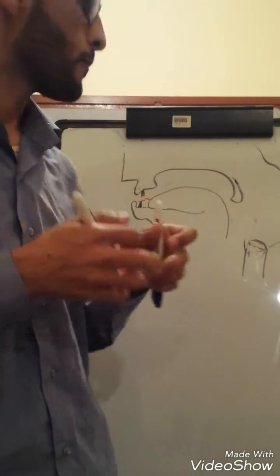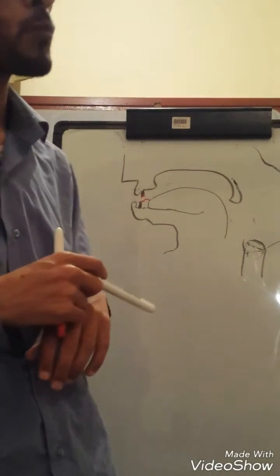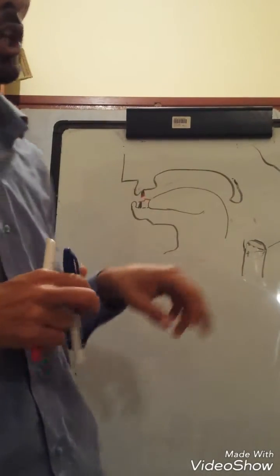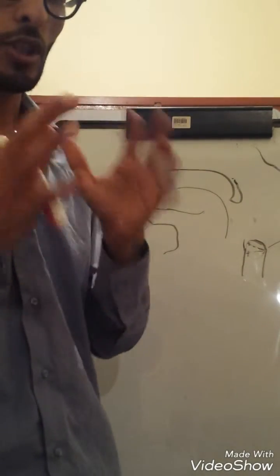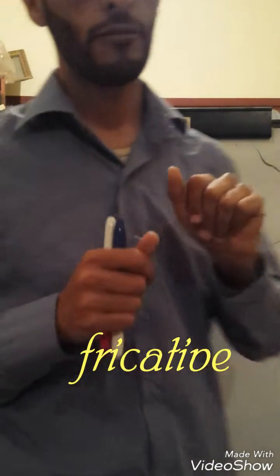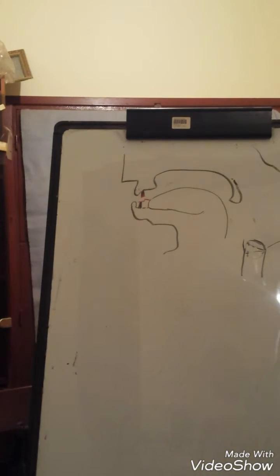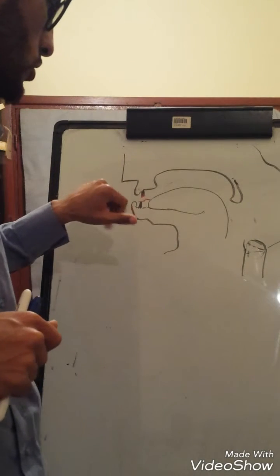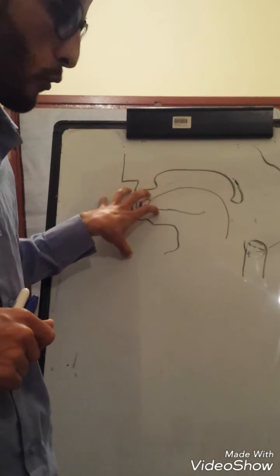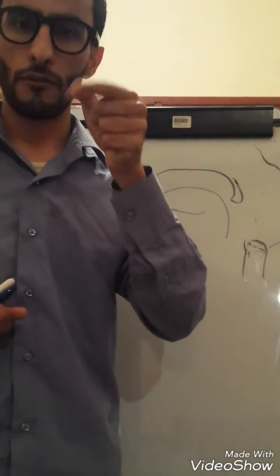the active articulator is the tip of our tongue or the blade of our tongue. The manner - there is friction, so it is fricative. So this sound is a voiced interdental fricative. Thank you for listening.